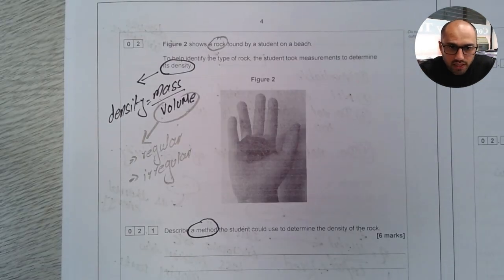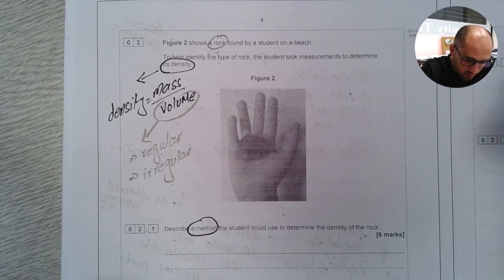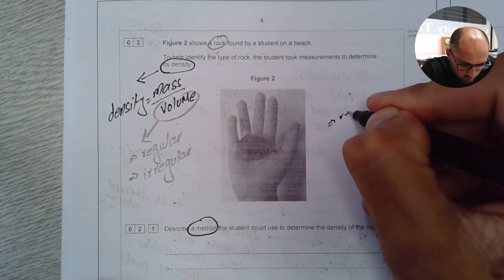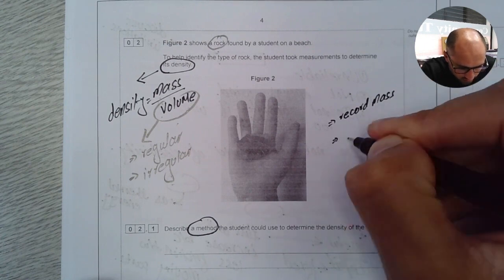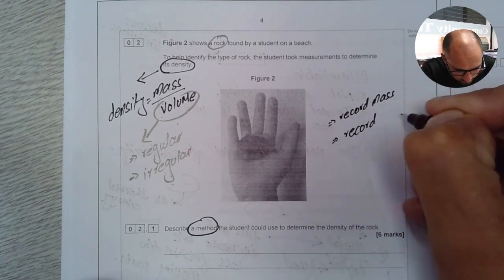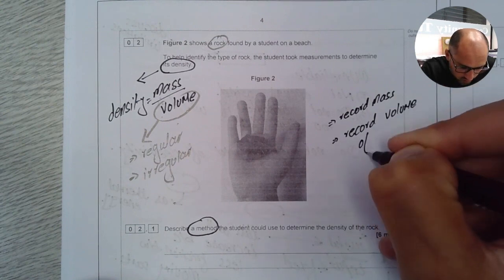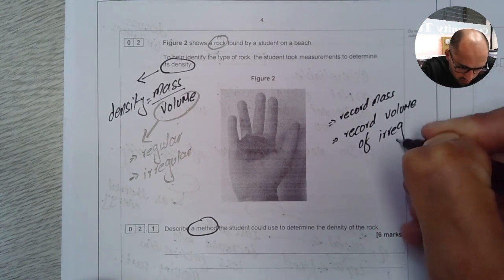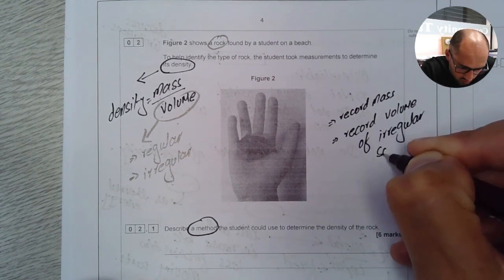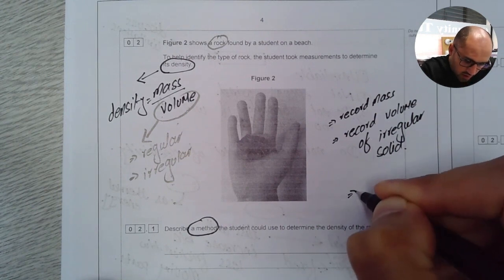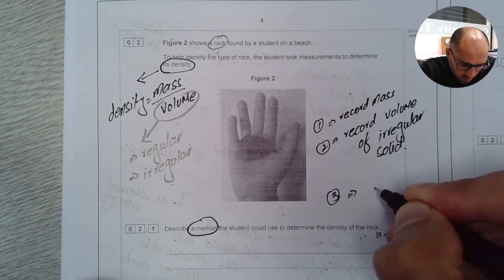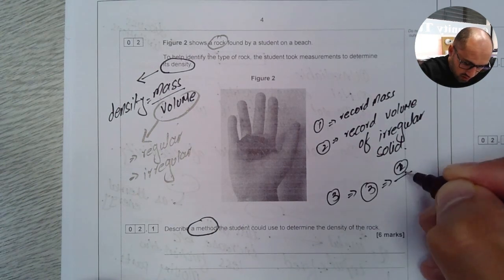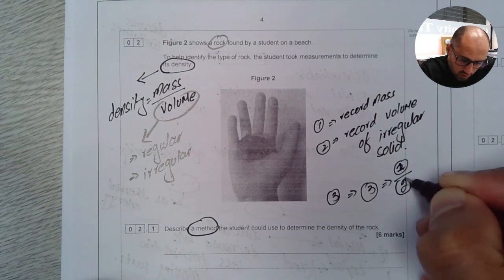So our annotations tell us a few things. Number one, we'll have to record mass. And we'll have to record volume of irregular solid. And number three, if I say this is one, this is two, this is number three. For number three, what I'll do, I'll divide the value of one by the value of two.